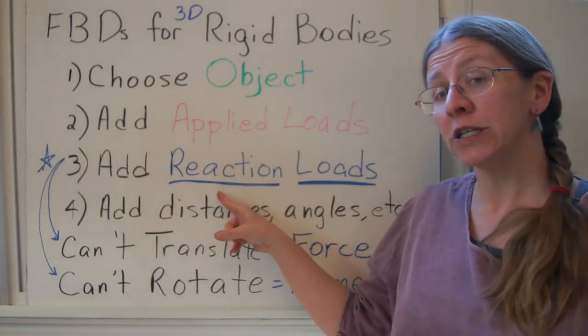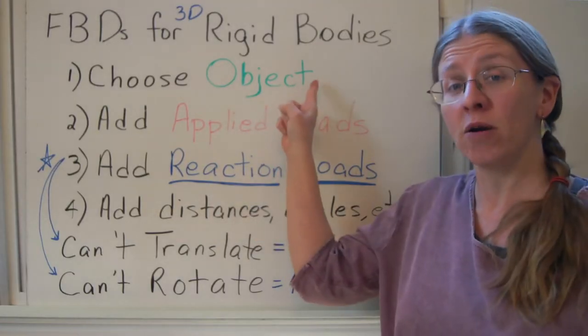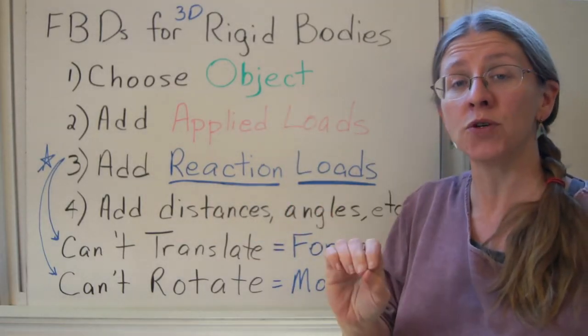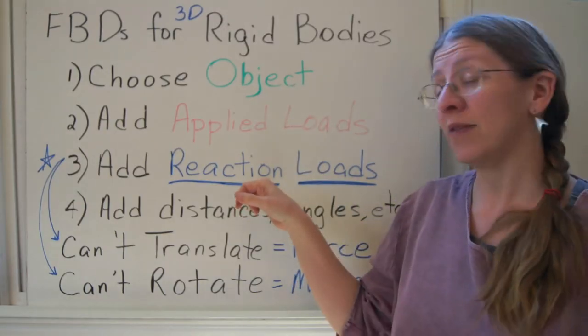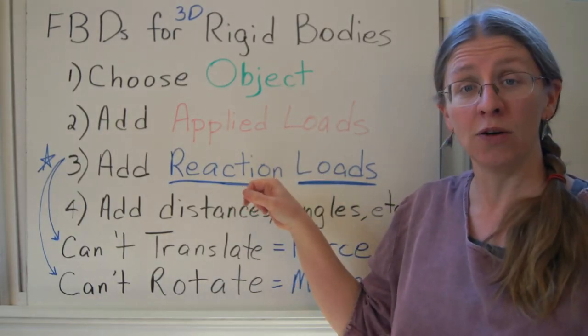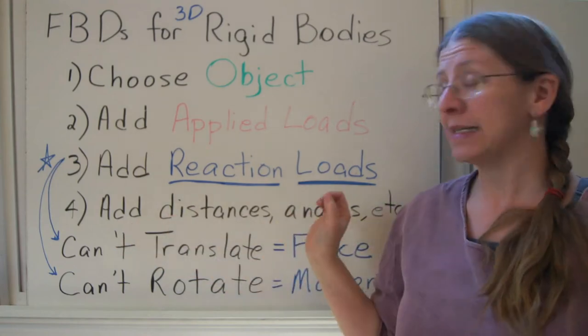Add the reaction loads from everything that's not part of your object. So every support that you have that you've removed in choosing your object, you have to ask, how was it constraining your object? Then we're going to add distances, angles, etc.